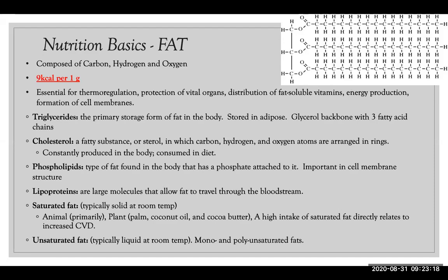When we get into the science behind energy systems, you'll notice that carbons, hydrogens, and oxygens are heavily involved in producing a muscular contraction. Fat, having a large amount of all three, gives nine calories of energy per gram consumed. Fat is also essential for thermoregulation, protecting vital organs, distributing fat-soluble vitamins — A, D, E, and K — producing energy, and forming cell membranes.